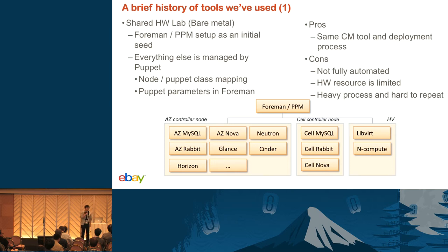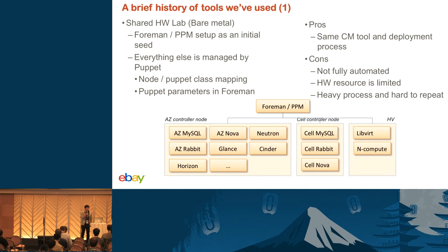So back to the previous point — when you have a hardware failure, what you should do is onboard a new box and register it to the Foreman host group. Then it will automatically start up the services — for example, Nova and Neutron. So this is how we do deployment in the site.